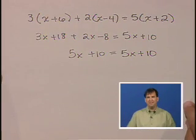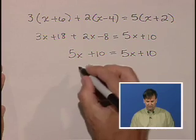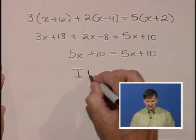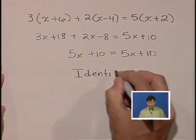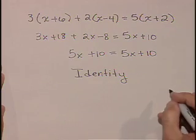At this point, we realize that the left-hand side is equal to the right-hand side without any further simplifications. And we can write that this is an identity. In other words, this is a true statement for all values of x.